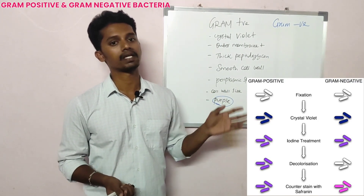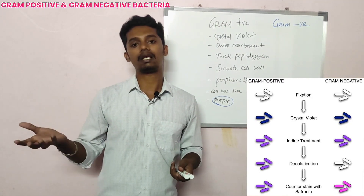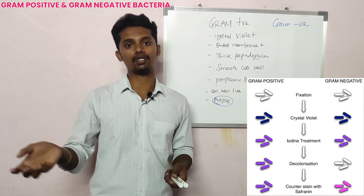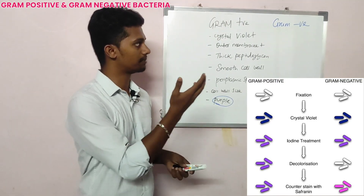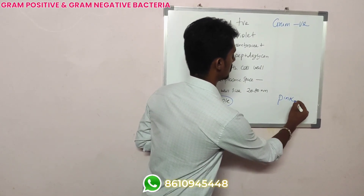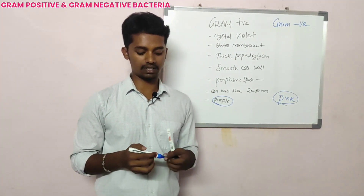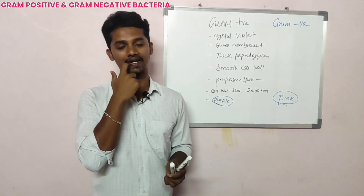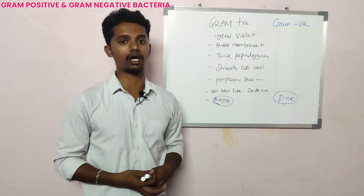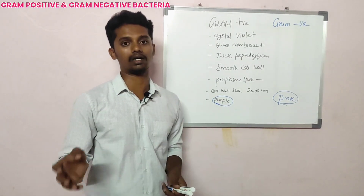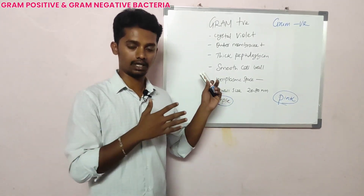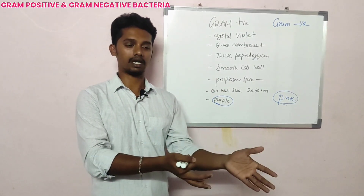This is gram negative — petri dish B — the color will change. We add safranin as a counterstain. So the gram negative will take on a pink color. Based on this, one set of organisms is gram positive and another set is gram negative. This is basic gram staining — how gram positive and gram negative are differentiated.